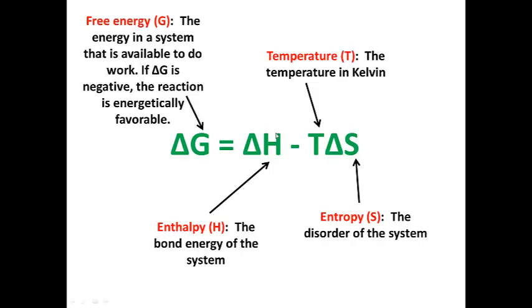Next we have delta H. Delta means change, and here H refers to enthalpy. For our purposes enthalpy can be defined as the bond energy of the system — meaning all of the energy contained in the bonds that are reacting. In the equation delta G equals delta H minus T delta S, T refers to the temperature specifically in units of Kelvin, and delta S refers to the change in entropy, which refers to the total disorder of the system.